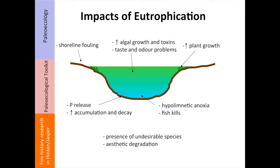Anoxia at the bottom of lakes can result from algal blooms, and in some cases you get the presence of undesirable species and aesthetic degradation in these lakes. These events can really change the way these systems function as a result of fires, though it depends on the particular lake whether this is a relatively big problem.